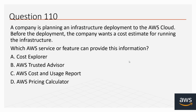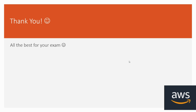Question number 110: A company is planning an infrastructure deployment to the AWS cloud. Before the deployment, the company wants a cost estimate for running the infrastructure. Which AWS service or feature can provide this information? Options: A. Cost Explorer, B. AWS Trusted Advisor, C. AWS Cost and Usage Report, D. AWS Pricing Calculator. The correct option is D, AWS Pricing Calculator.